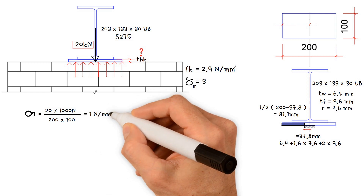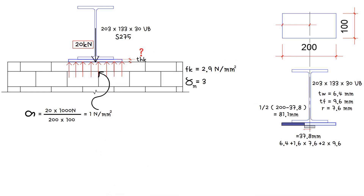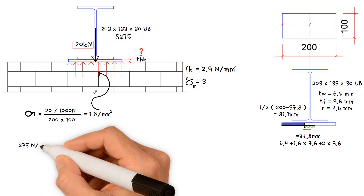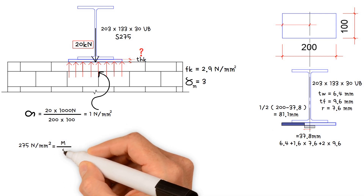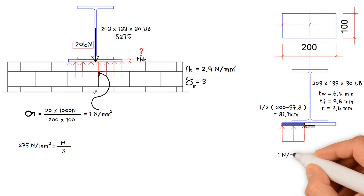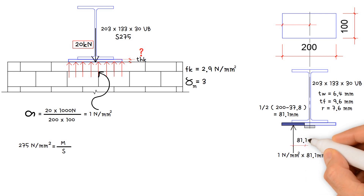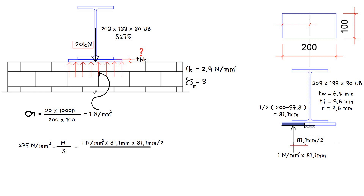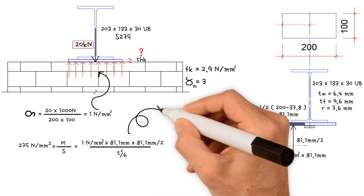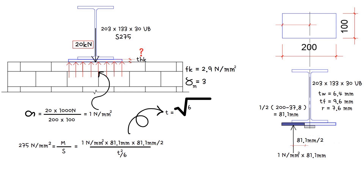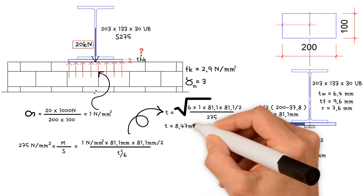In order to work out the plate thickness, we use the equation: yielding stress 275 N/mm² equals bending moment divided by section modulus. The bending moment equals stress under the plate (1 N/mm²) times the bearing plate projection length (81.1 mm) times half of the bearing plate projection length (81.1 mm). The required plate thickness equals the square root of 6 times stress under the plate (1 N/mm²) times bearing plate projection length (81.1 mm) times half of that length, divided by steel yielding stress (275 N/mm²). This gives us a value of 8.47 mm.